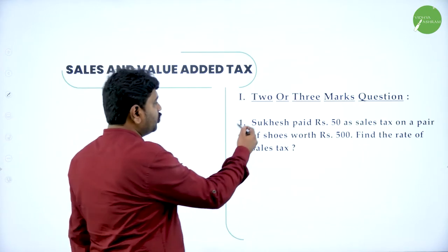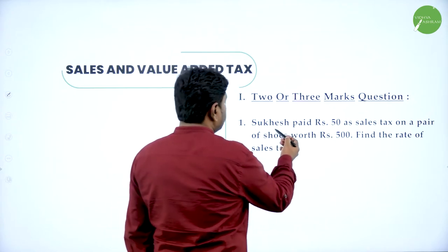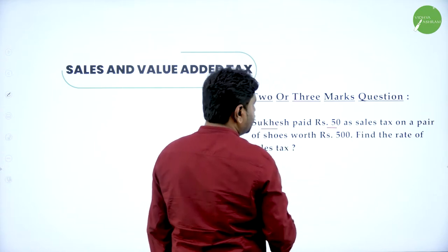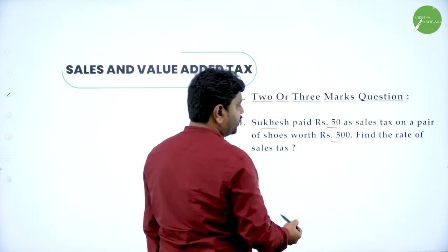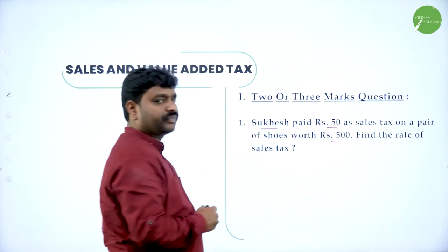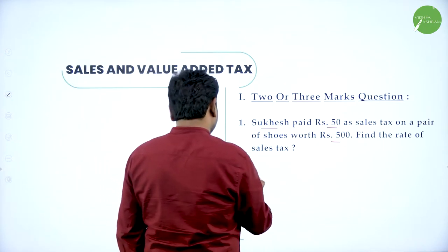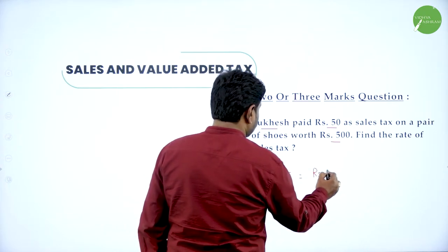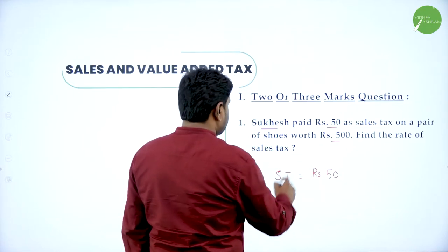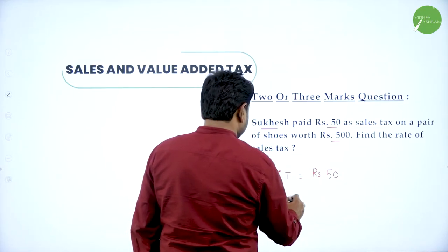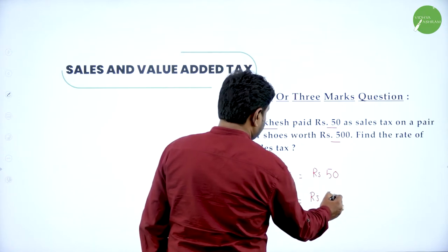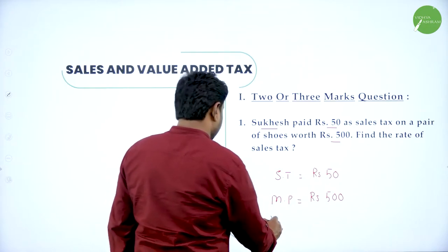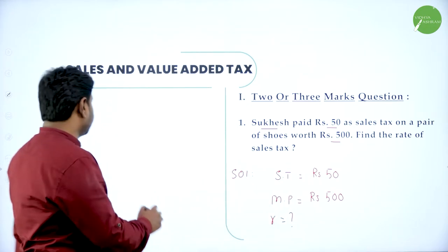Let's look at some two-mark or three-mark problems. Sukesh paid rupees 50 as sale tax on a pair of shoes worth rupees 500. Find the rate of sale tax. So, the sale tax paid by Sukesh — ST — is rupees 50, and the market price is rupees 500. We need to find the rate of sale tax.